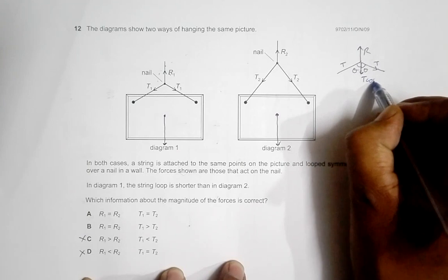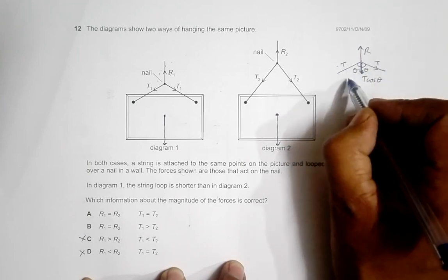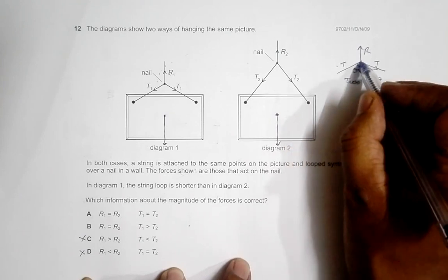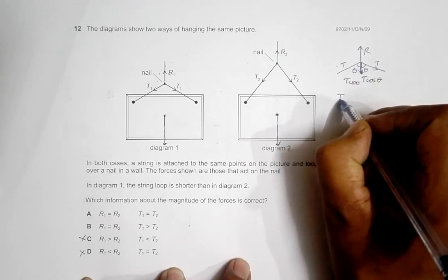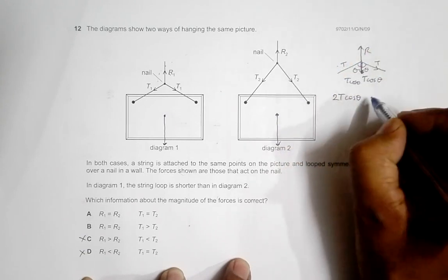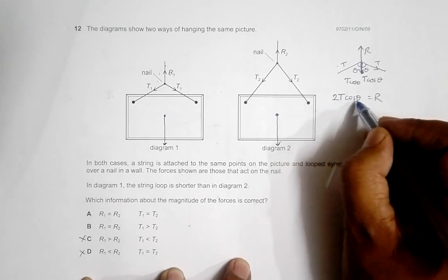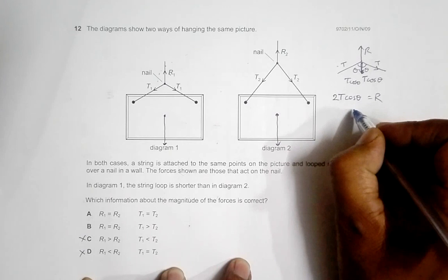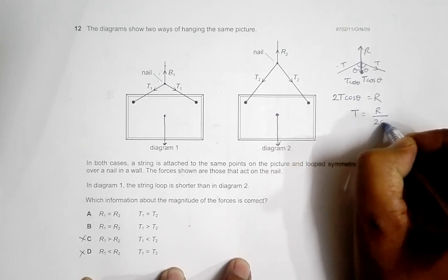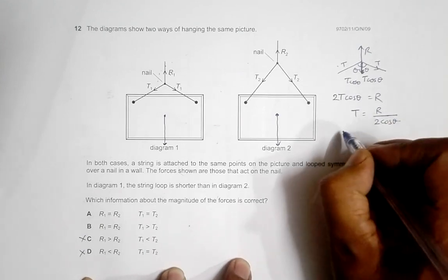The component of this tension force over here is T cos theta, and its component here is also T cos theta. So the total force downward is 2T cos theta. Since the whole system is in balance, it should equal R. So 2T cos theta equals R. Therefore, T equals R divided by 2 cos theta.